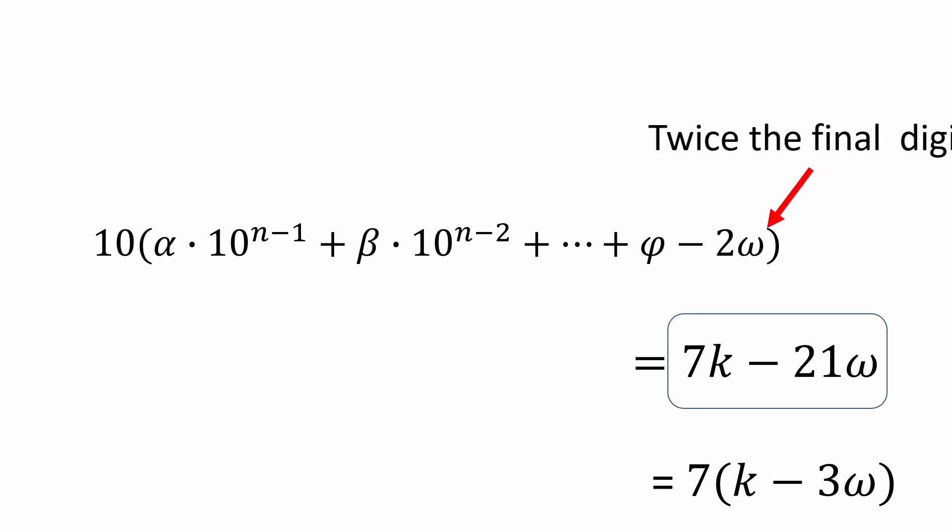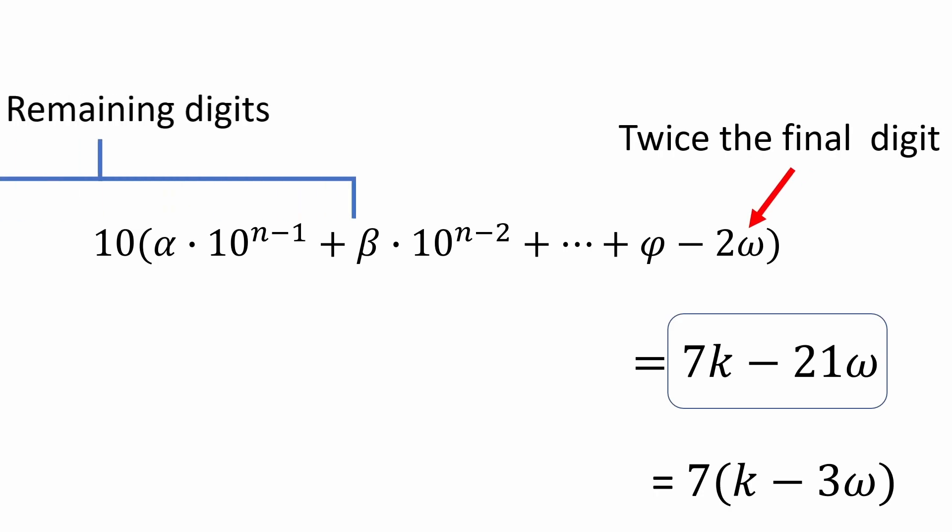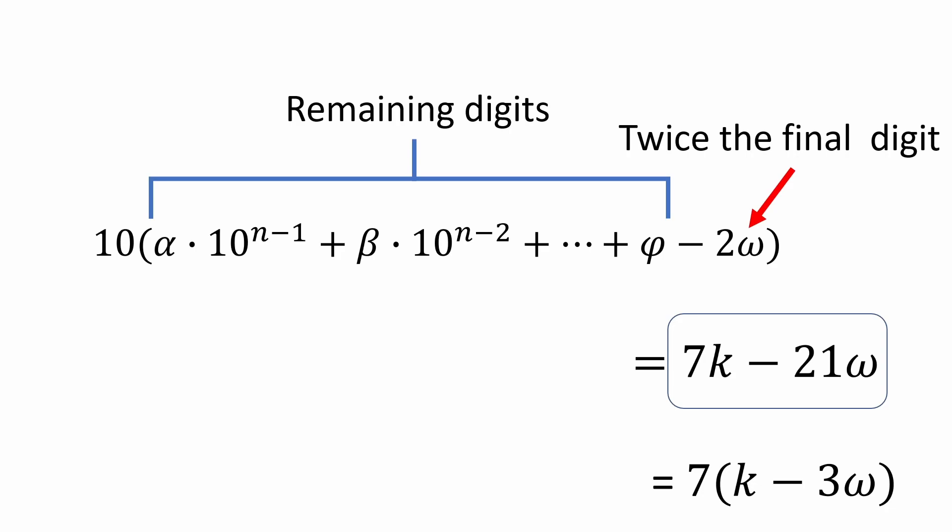And notice that 2 omega is twice the final digit, which we subtract from the remaining digits. We can repeat the process as often as we like, since we can keep factoring out 10 and be left with a number one digit less than before. And we stop the process when we know if the remaining digits are divisible by 7 or not.